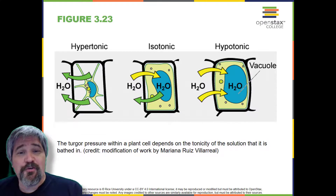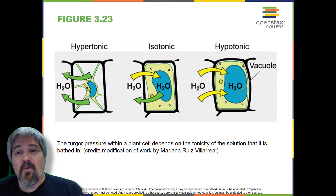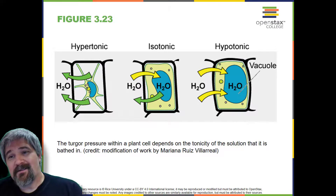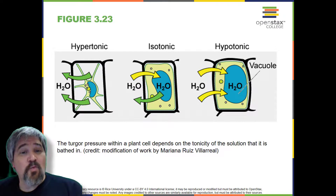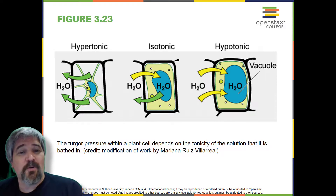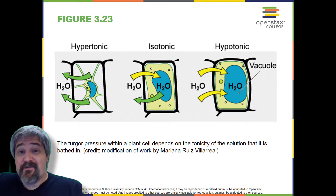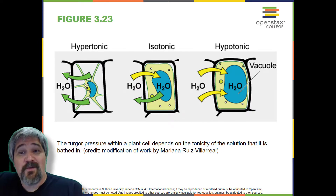This influx of water produces turgor pressure — T-U-R-G-O-R — which stiffens the cell walls of the plant. In non-woody plants, turgor pressure supports the plant. If the plant cells become hypertonic, as occurs in drought, or if a plant is not watered adequately, water will leave the cell. Plants lose turgor pressure in this condition and wilt.